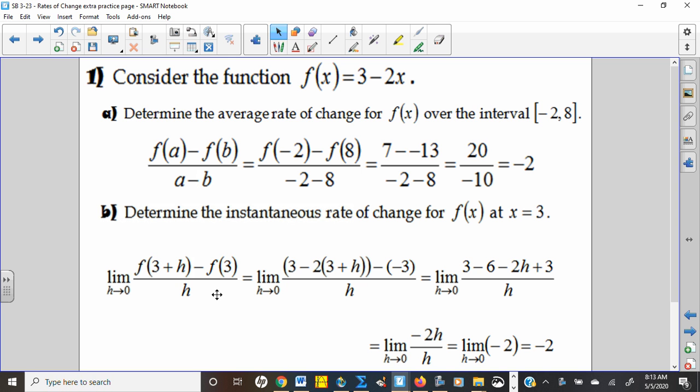Number one, just kind of standard linear function, it's the average rate of change over the interval negative 2 to 8, so we're really just finding two points, negative 2 something, 8 something, plug them into the function to figure out what those values would be, and then find the slope.